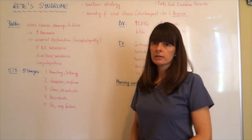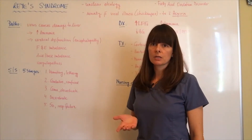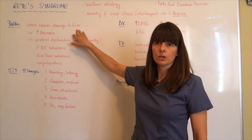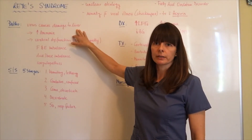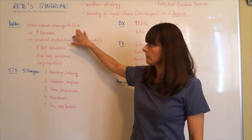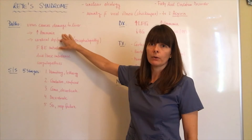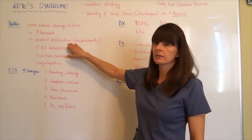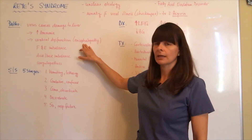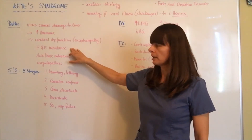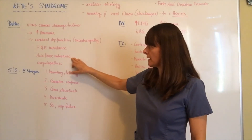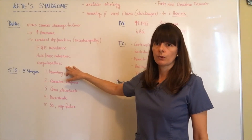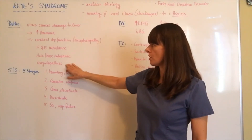So what happens? In Reye's syndrome, the virus, in addition to the exposure to the aspirin, causes damage to the liver cells. The liver is a detoxification organ and ammonia is a by-product that is usually broken down by the liver. But if the liver is damaged, it will lead to increased levels of ammonia. This increased level of ammonia can cross the blood-brain barrier, causing cerebral dysfunction and encephalopathy in addition to cerebral swelling. Fluid and electrolyte imbalances are also very common, as well as acid-base imbalances and coagulopathies — so trouble with blood clotting — as the liver is also in charge of coagulation.